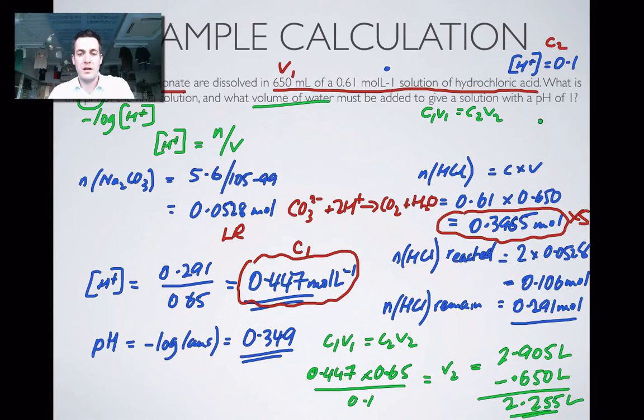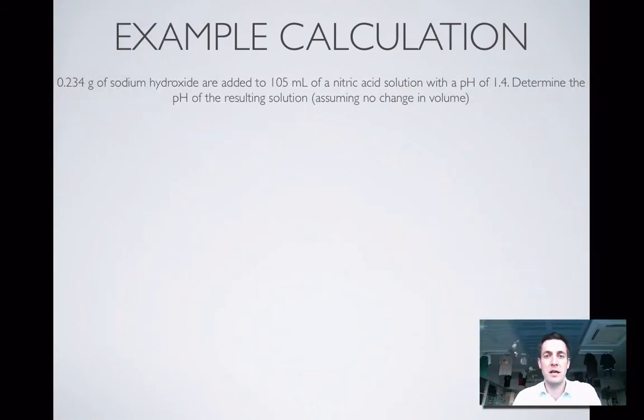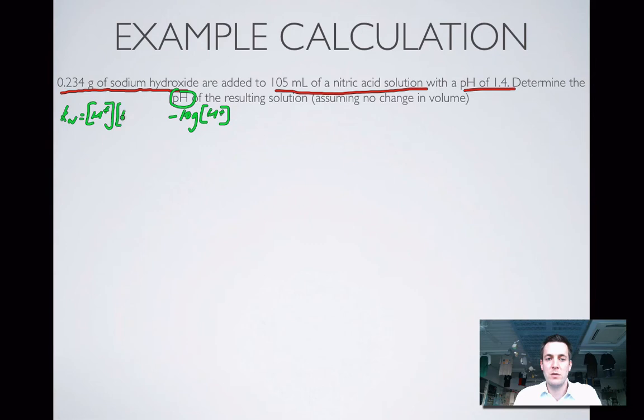That calculation there was tricky, but relatively simple in that we had to find the pH from the concentration of H plus ions. What we'll do now is we'll have another similar calculation where we're going to be finding the pH in a different way. There's a bit of a hint there for you, but anyway, we've got 0.234 grams of sodium hydroxide. We're reacting it with nitric acid, that volume, and this pH. Determine the pH of the resulting solution again. This is usually minus log to the base 10 of the H plus ion concentration, but remember, we could use Kw. Kw equals concentration of H plus times the concentration of OH minus. So if we had a concentration of OH minus, we could find this and find the pH.